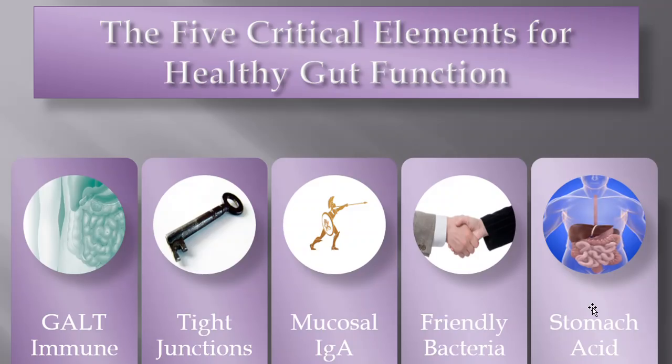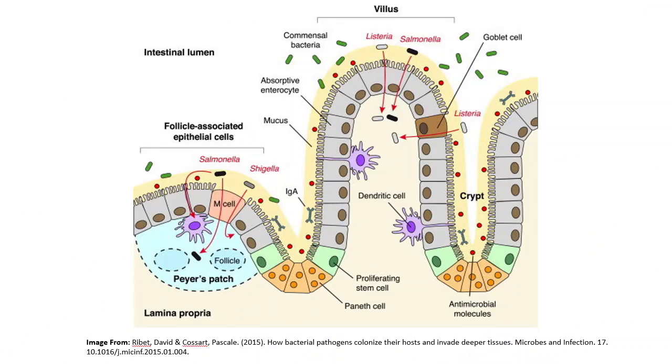Then just above the small intestine, we have the stomach. That stomach acid is very, very critical for protecting us from potential infections. It's very important for digesting proteins and amino acids. It's very important for mineral absorption. Very, very critical — these five barriers you need to understand.